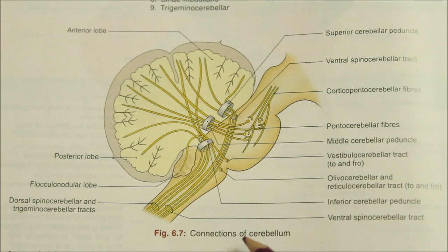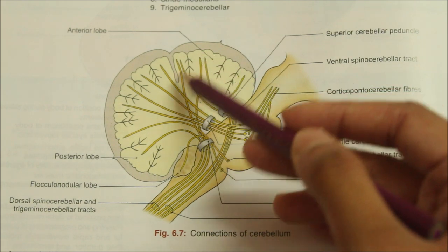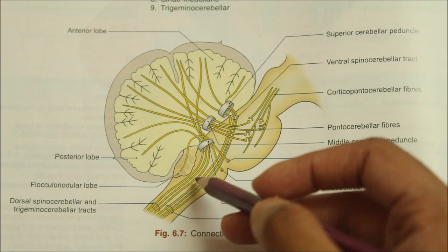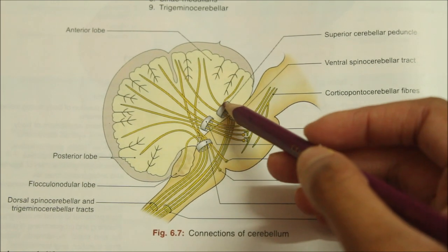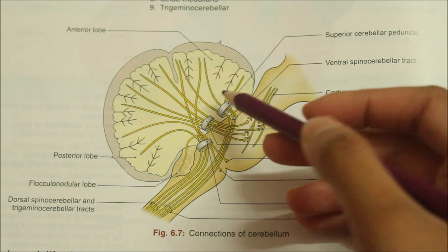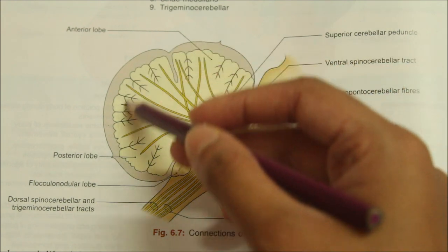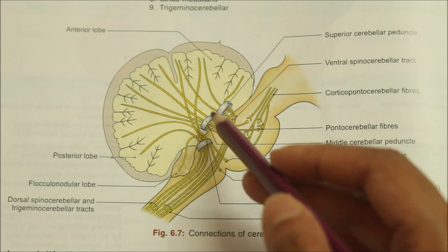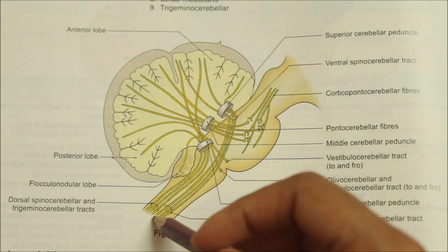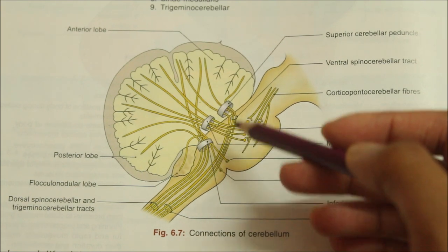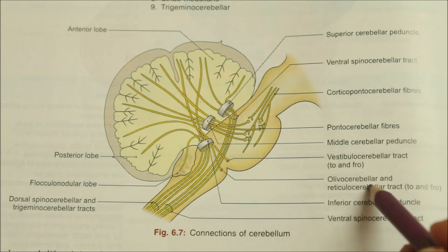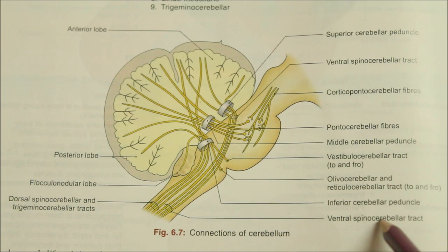Moving on to the connections of the cerebellum: fibers entering or leaving the cerebellum are grouped to form three peduncles which connect the cerebellum to the midbrain, pons, and medulla. The superior cerebellar peduncle connects the cerebellum to the midbrain. The middle cerebellar peduncle connects the cerebellum to the pons. The inferior cerebellar peduncle connects the cerebellum to the medulla. Each peduncle carries afferent and efferent fibers, including pontocerebellar fibers, the olivocerebellar and reticulocerebellar tracts, and the ventral spinocerebellar tract.